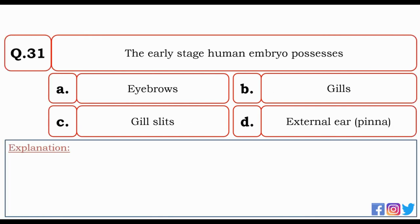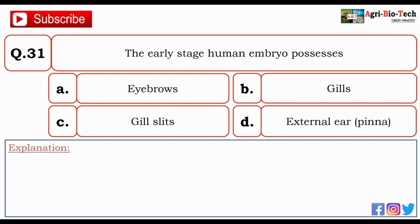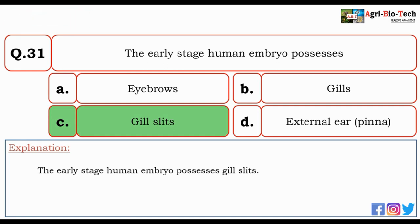First question: the early stage human embryo possesses — eyebrows, gills, gill slits, or external ear (pinnae)? The correct answer is C — gill slits. The early stage human embryo possesses gill slits.